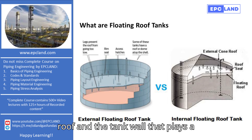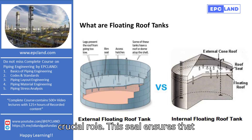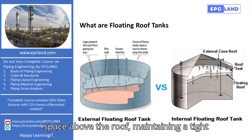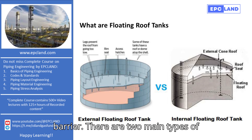There's a seal between the roof and the tank wall that plays a crucial role. This seal ensures that the process vapors do not leak into the space above the roof, maintaining a tight barrier.